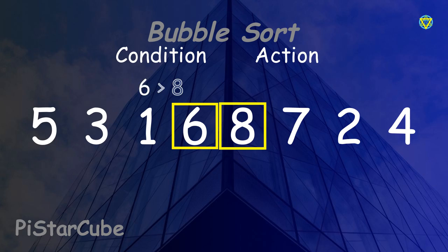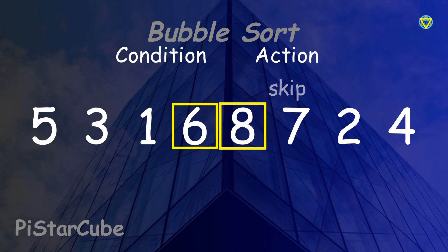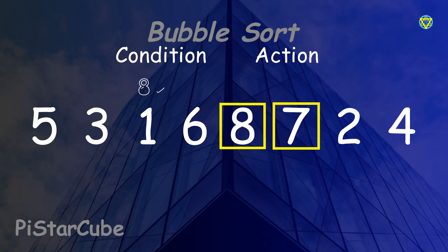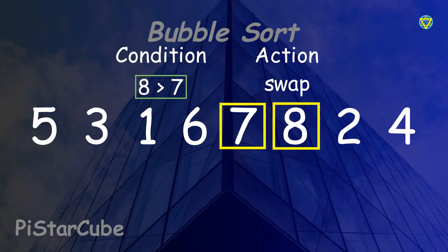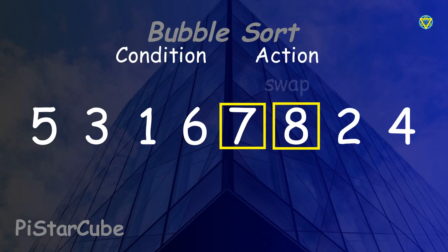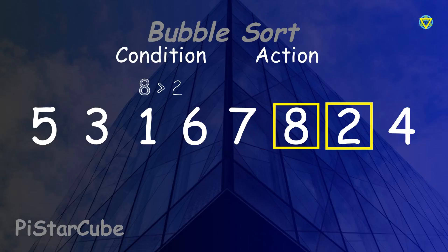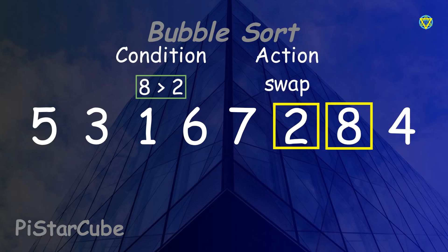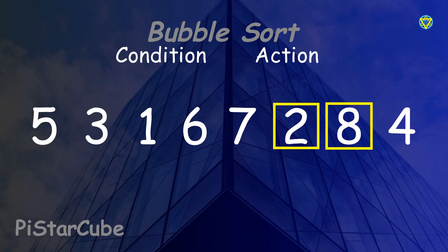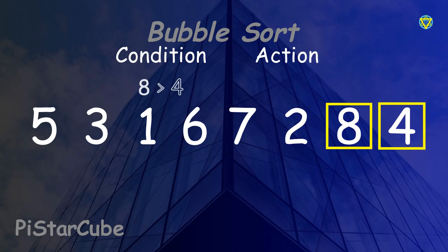Now comes the interesting case — 6 and 8. 6 is greater than 8? No, so it skips those elements. Then it keeps repeating the same steps: 7 and 8, then 8 and 2 — it swaps, then 8 and 4 — it swaps.